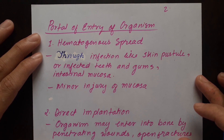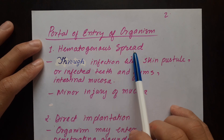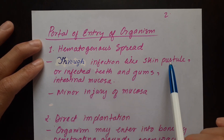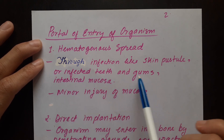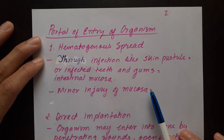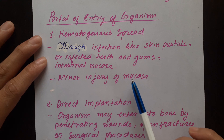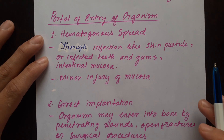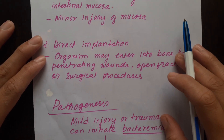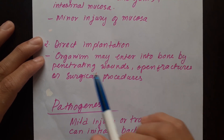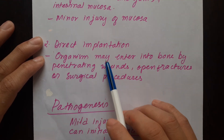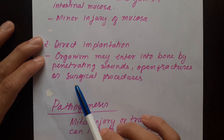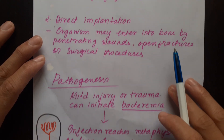Now let's see the portal of entry — how organisms enter the body and cause osteomyelitis. Number one: hematogenous spread through infections like skin pustules or pimples, skin, infected teeth and gums, and intestinal mucosa or minor injury of mucosa. They somehow reach the blood and cause bacteremia, which leads to pyogenic osteomyelitis. Number two: direct implantation — organisms may enter bone by penetrating wounds, open fractures, or surgical procedures.